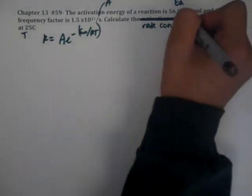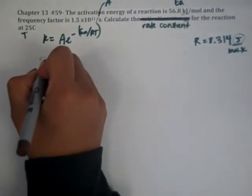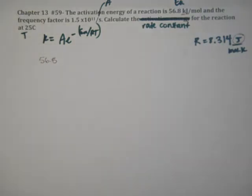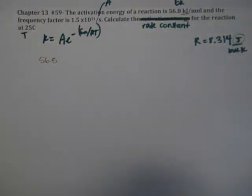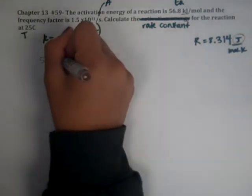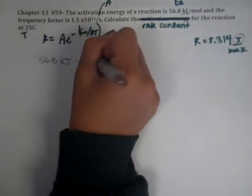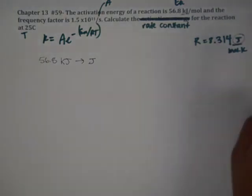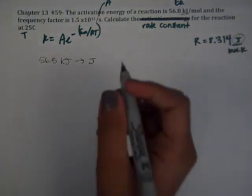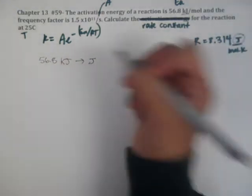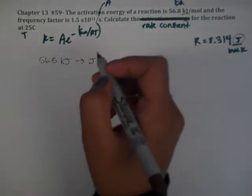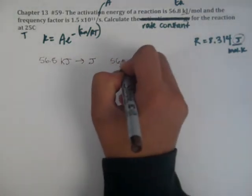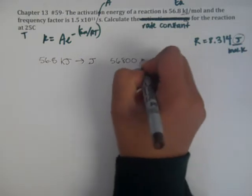So the first thing we need to do is convert this 56.8 kilojoules. We have to convert that into joules because, first of all, it is SI units and this r is in joules. So if we convert that to joules, it's going to be times 1,000. So we're going to have 56,800 joules.